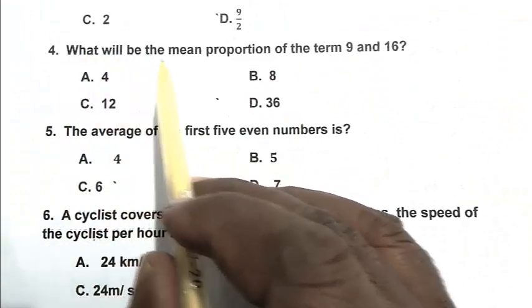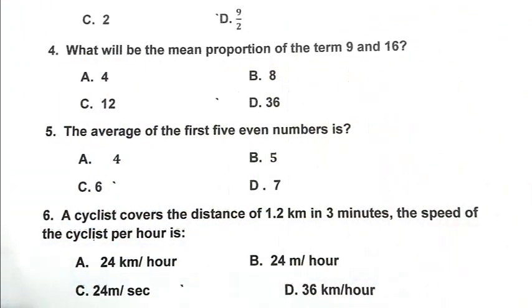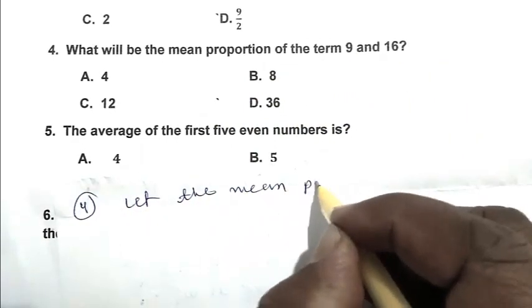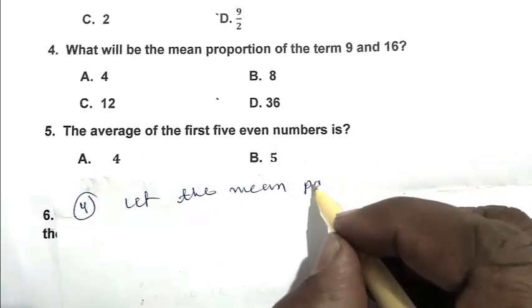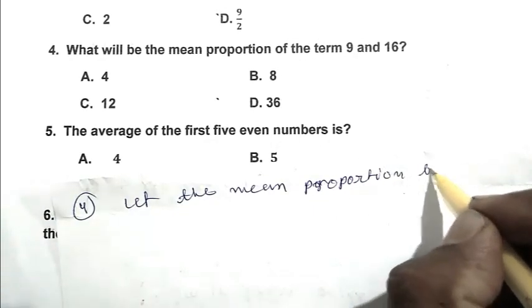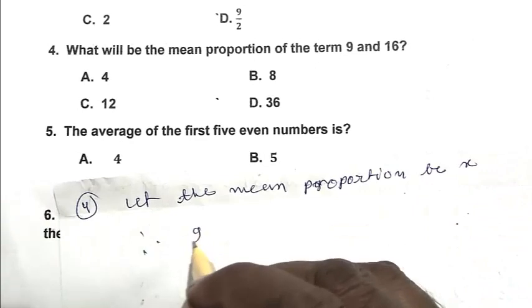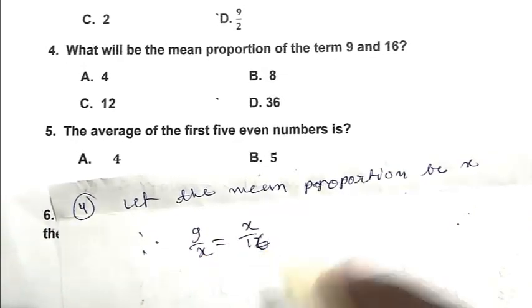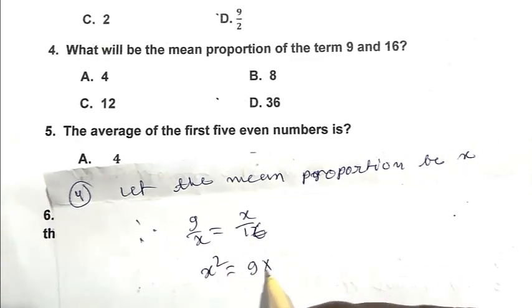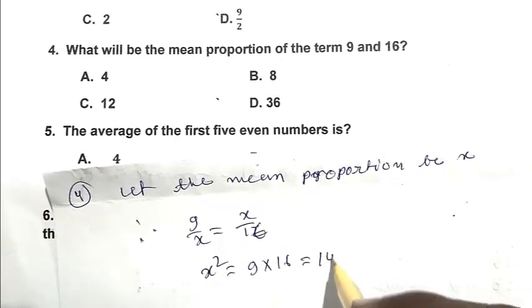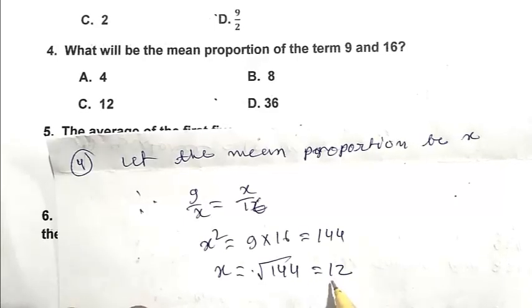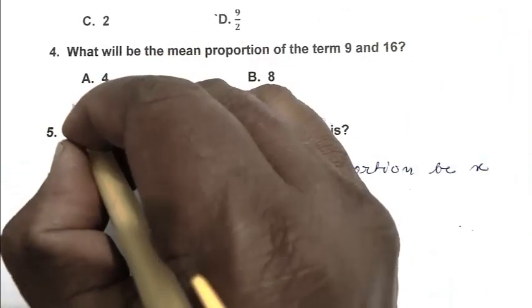Question number 4: What will be the mean proportion of the terms 9 and 16? Let the mean proportion be x. Then 9/x = x/16. So x² = 9 × 16 = 144. So x = √144 = 12. So the mean proportion is 12, and C is the right answer.